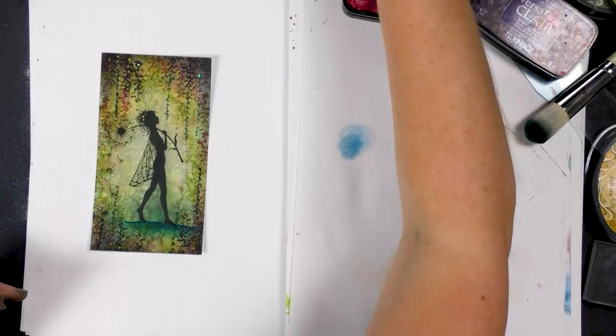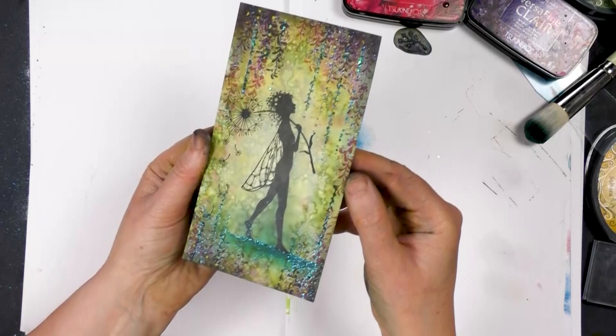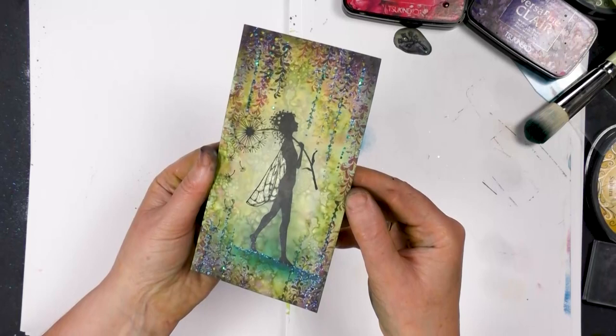And there we have our lovely dandelion fairy. I hope you can see the glitter, just hold it in the light there. And her lovely wing that we've used the Secura pen on.